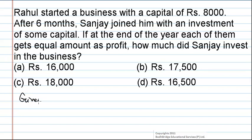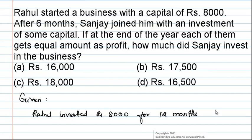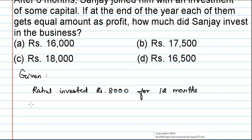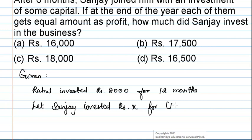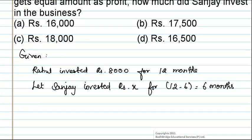It is given that Rahul invested 8,000 rupees for 12 months, which is equal to one year. Let Sanjay have invested some capital amount — let it be rupees X — for 12 minus 6, which is equal to six months, because Sanjay joined Rahul only after six months.